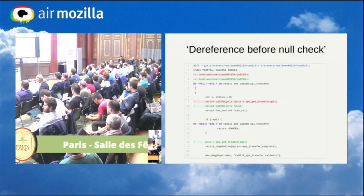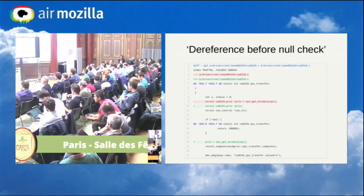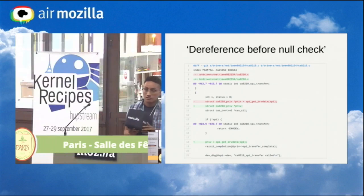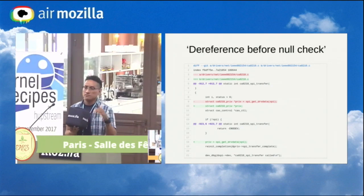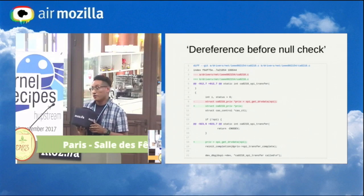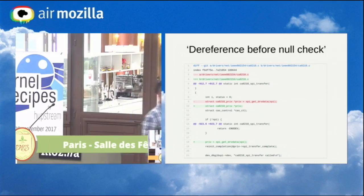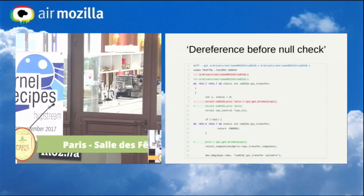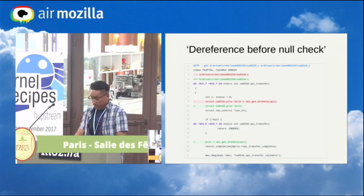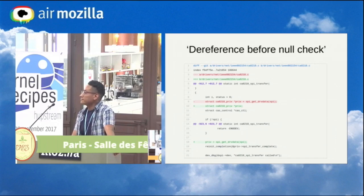The speaker says he had the same discussion with some maintainers who said this pointer can never be null at that point. Some suggested it's a false positive and you can't remove it; in other cases the patch was accepted as correct. An audience member adds: only if you think the pointer might be null AND you can do something about it should you have a null check. Otherwise it's better to let the kernel oops and report the message so you can find whatever bug caused it.